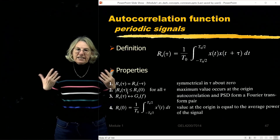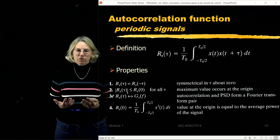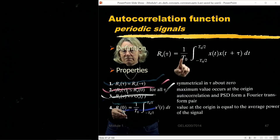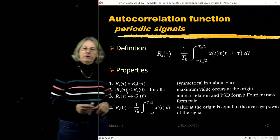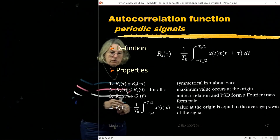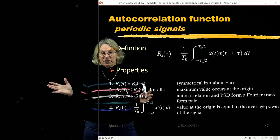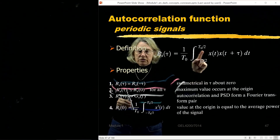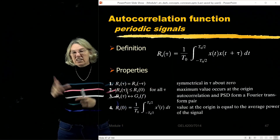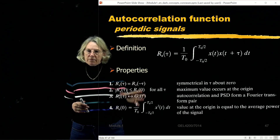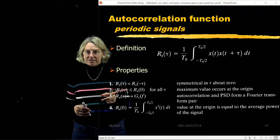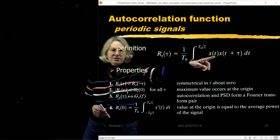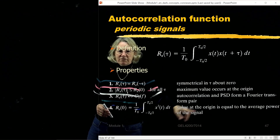The autocorrelation function for periodic signals is essentially the same, except it's defined over a single period (from -T0/2 to T0/2) with normalization by that interval — because integrating to infinity would blow up. The properties remain the same: symmetric about the origin, maximum at the origin, and its Fourier transform gives the power spectral density. Setting tau equal to 0 gives the average power of the signal.